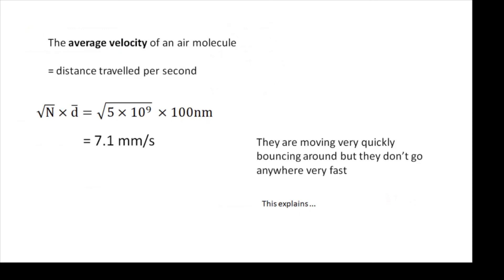So the average velocity of an air molecule—you know, how far does it actually travel—is the distance travelled per second. So that is root N, the square root of the number of collisions, times the mean free path. So that's the square root of 5 times 10 to the 9 times 100 nanometers.